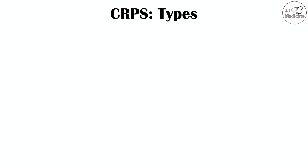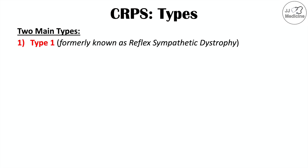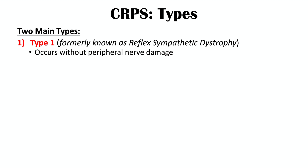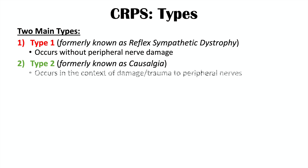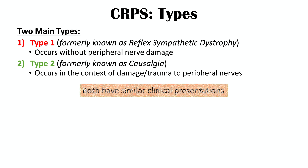Before the signs and symptoms, let's talk about the two main types of CRPS. Type 1, formerly known as reflex sympathetic dystrophy, occurs without peripheral nerve damage — usually from a minor injury. Type 2, formerly known as causalgia, occurs in the context of damage or trauma to peripheral nerves, typically from a more severe injury. Both types have similar clinical presentations.